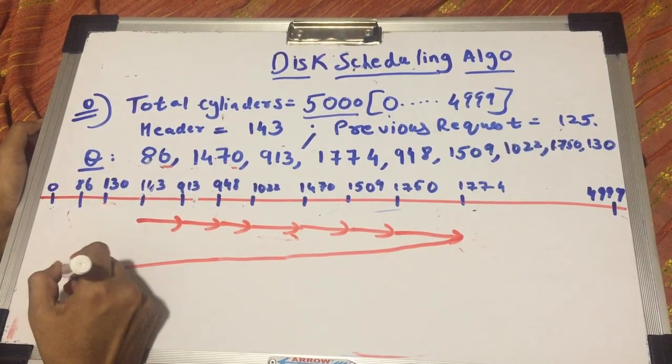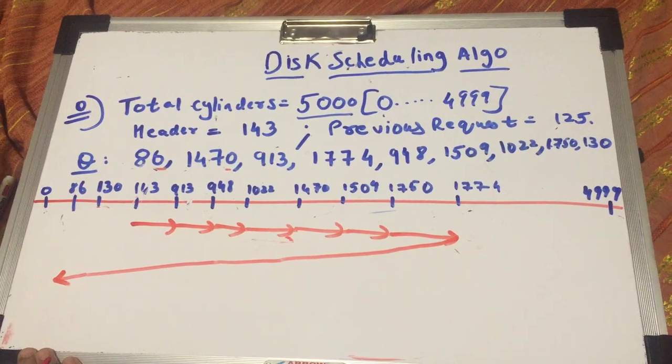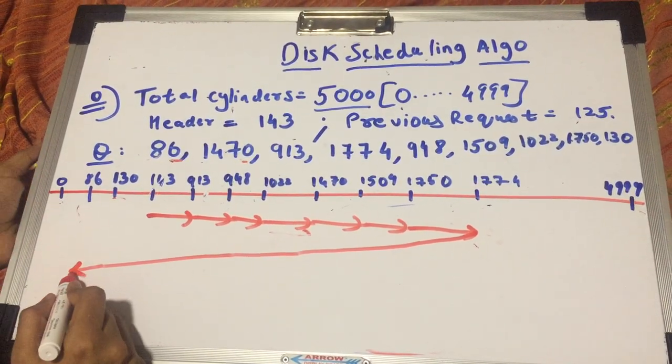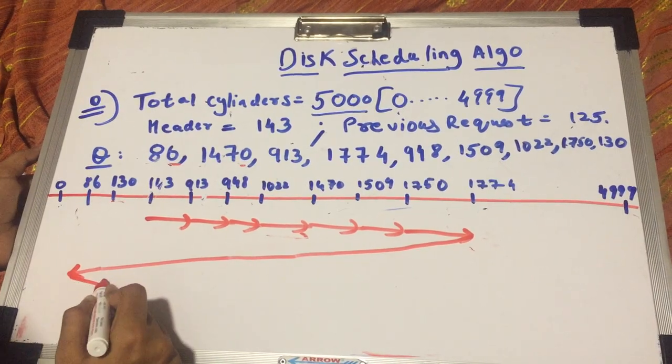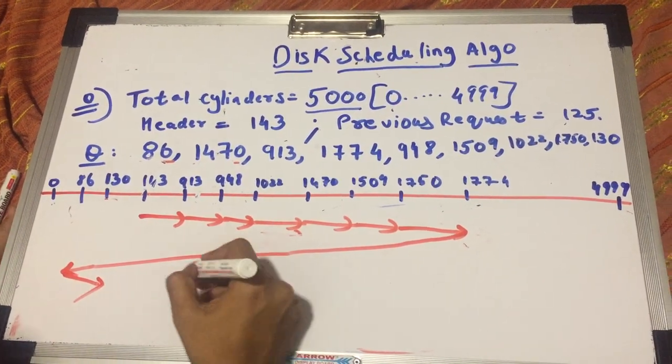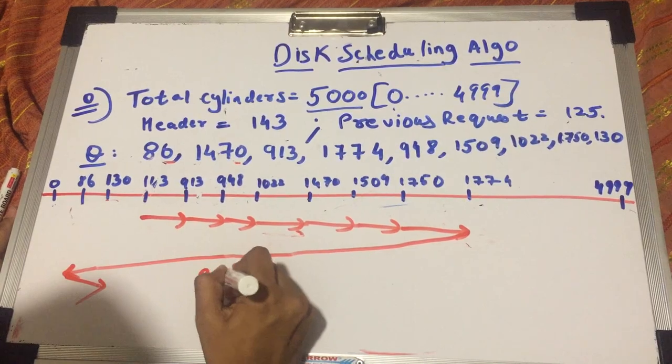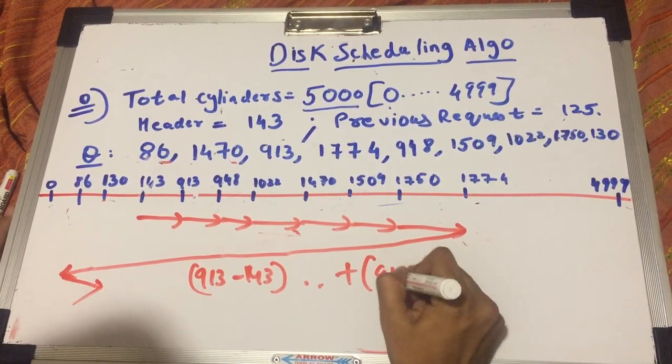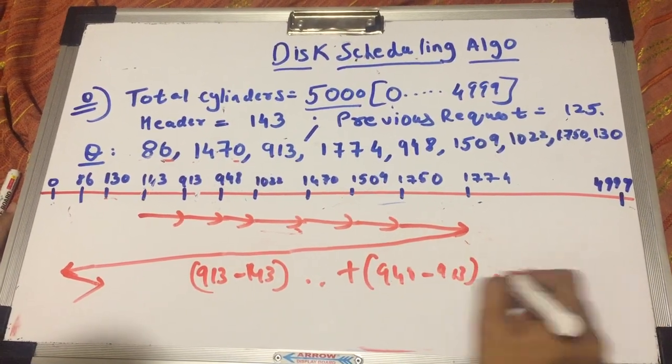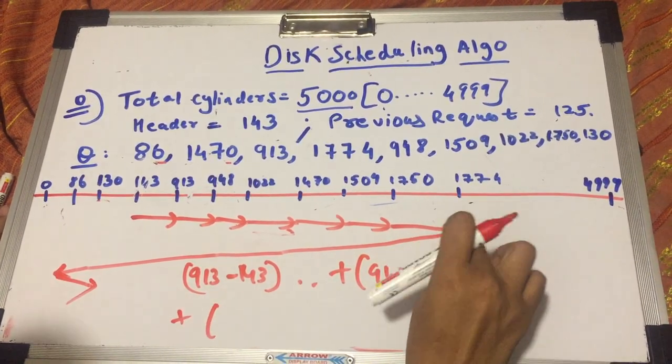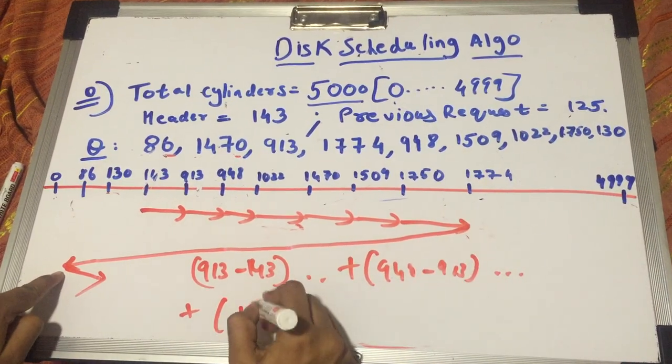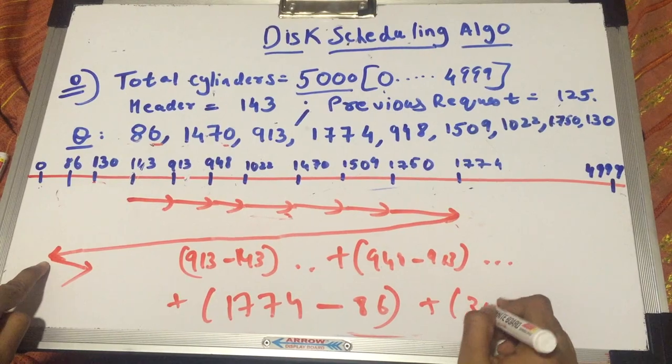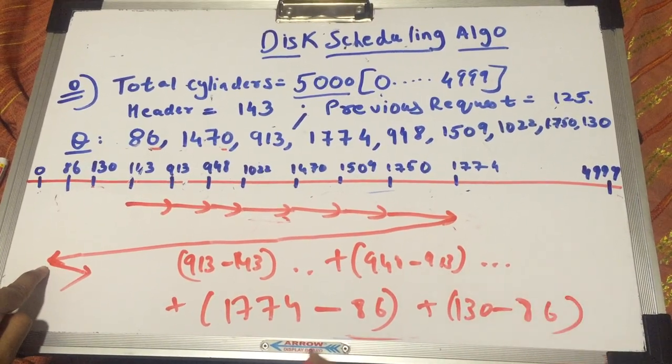Because you don't go to the extreme. You go to the least value which you need to seek. So you go to 86 and then from 86 you go to 130 and this is how you end.